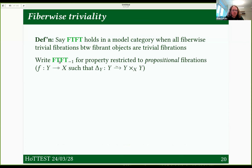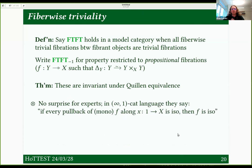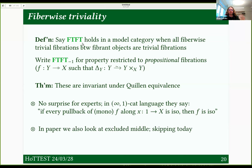I'll also talk occasionally about this property restricted to propositional fibrations — fibrations where the diagonal is a weak equivalence. You can think of propositional fibrations as types that are propositional. First theorem: these two properties are invariant under Quillen equivalence. For people immersed in the language of infinity categories, this is not surprising. Essentially what this is saying is: if you have a map f and every pullback of f to a point is an isomorphism, then f is an isomorphism. The propositional case corresponds to only asking this for monomorphisms f.